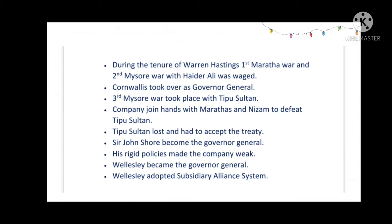After Warren Hastings, Cornwallis became the Governor General, and during his tenure the Third Mysore War took place — this time with Tipu Sultan, who was well known as the Tiger of Mysore. The British adopted the policy of divide and rule, joining hands with the Marathas and the Nizams to defeat Tipu Sultan. As all three powers — the British, Marathas, and Nizams — were against him, Tipu Sultan lost the battle and had to accept a treaty.